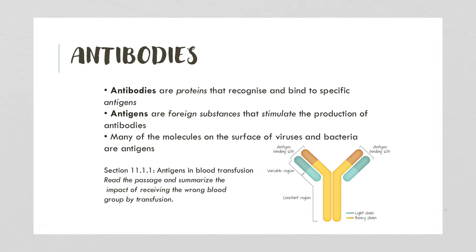Antibodies are special proteins made of multiple protein subunits. They recognize and bind to specific antigens. Antigens are foreign substances that stimulate the production of antibodies — our immune system recognizes them as 'other' and starts creating antibodies against them. Many molecules on the surfaces of viruses and bacteria act as antigens.